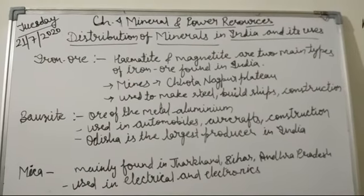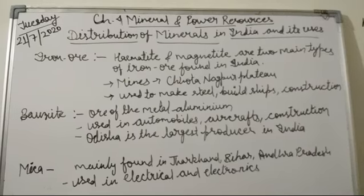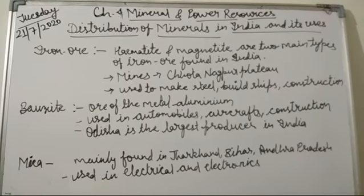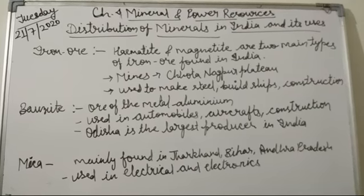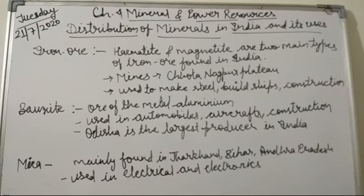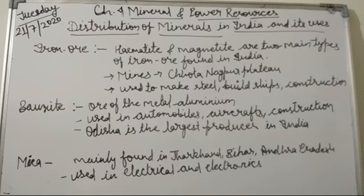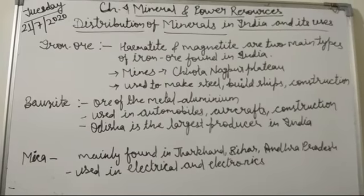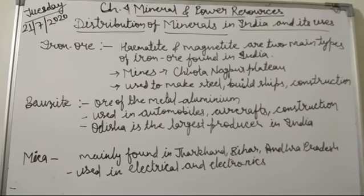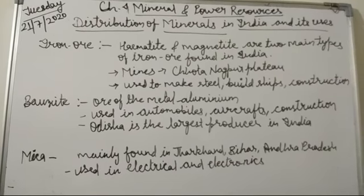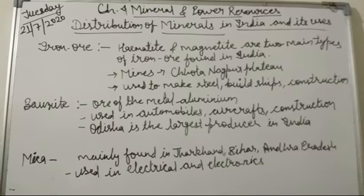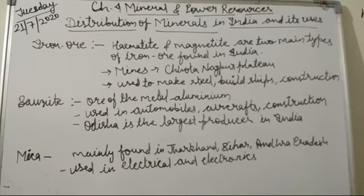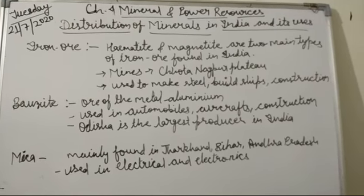The first mineral is iron ore. India has one of the largest reserves of iron ore in Asia. So if there is a question about which country has the largest iron ore reserves in Asia, the answer is India. There are two main types of iron ore found in India: hematite and magnetite. The iron ore mines are found very close to the coal fields in the Chota Nagpur plateau, which is an advantage for industrial development, as having raw material close to industries leads to profitability.